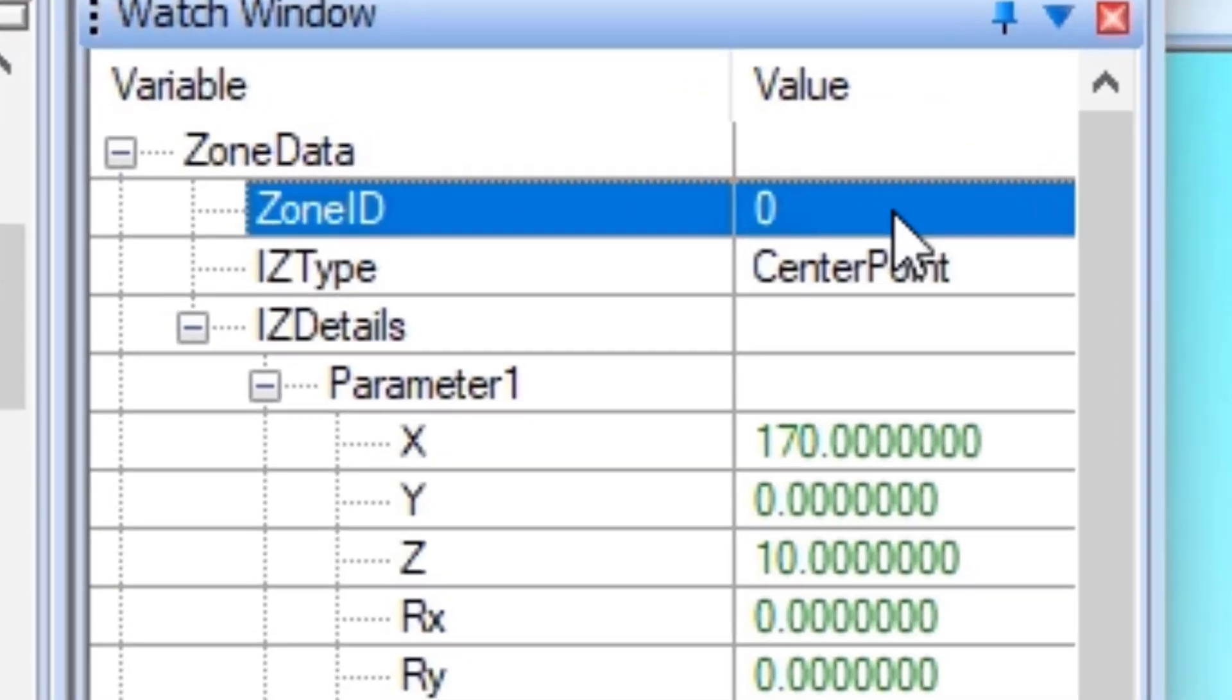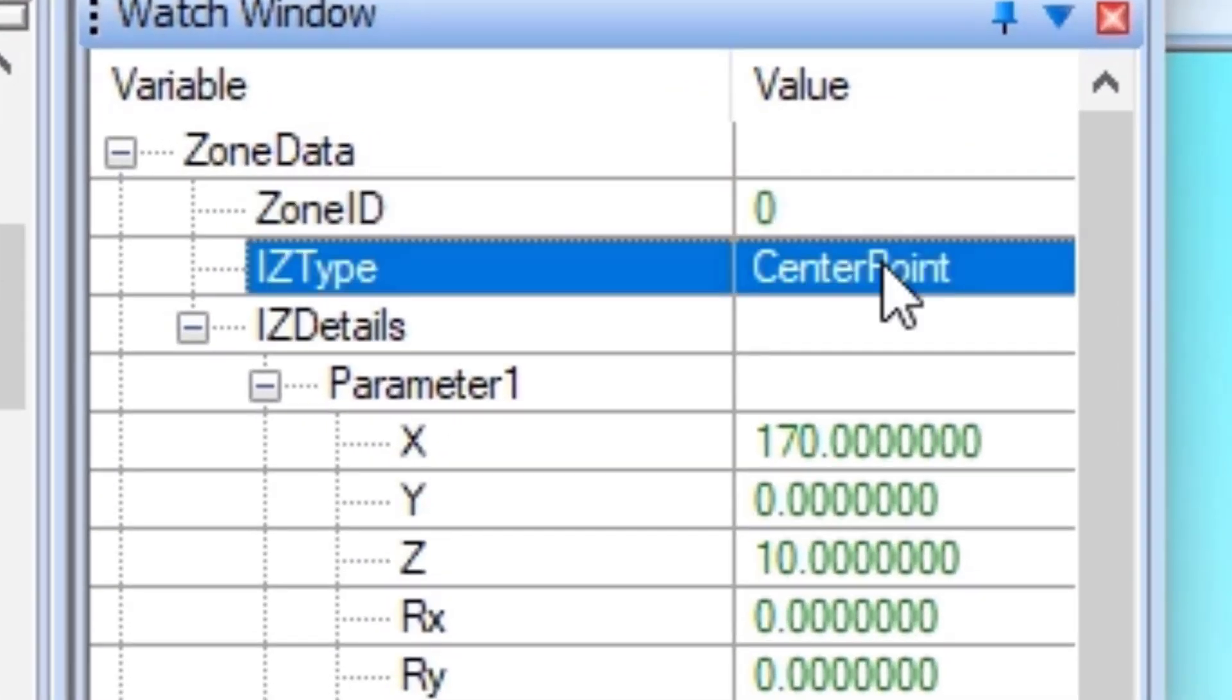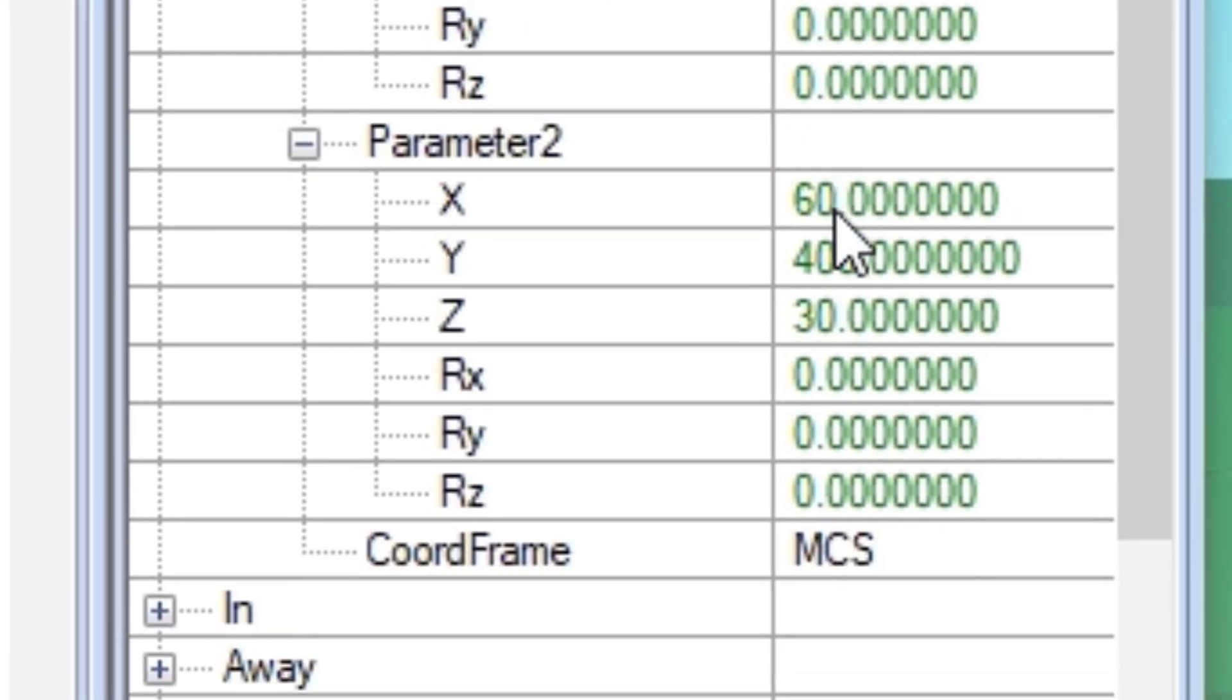You can see I'm using zone ID 0. Center point is selected as the IZ type, which means parameter 1 contains the center point coordinates, and parameter 2 contains the width, length, and height. This is all using the machine coordinate system, or MCS.